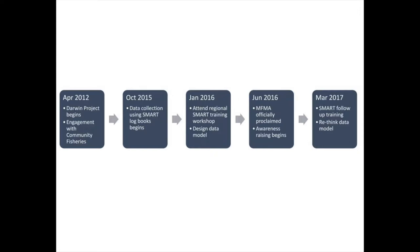Patrols began in a fairly unstructured way in about 2014. These patrols simply involved the community going out with a GPS, which would record a track of where they went. Sometimes they might record if they encountered someone. It was very basic data collection which didn't really tell us as managers whether the community were actually going out — because you could just put a GPS on any old boat.